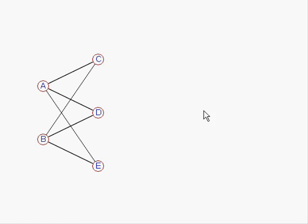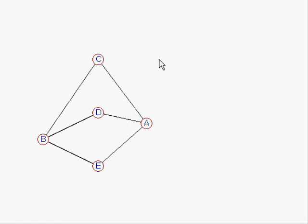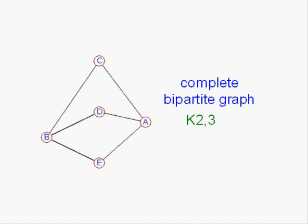Now, that is what we call K2,3. And we're interested in, is it planar? Well, it doesn't look like it at this stage, but all we have to do is to drag one of the nodes. Yes, this is a complete bipartite graph, K2,3. We can see that it's planar.